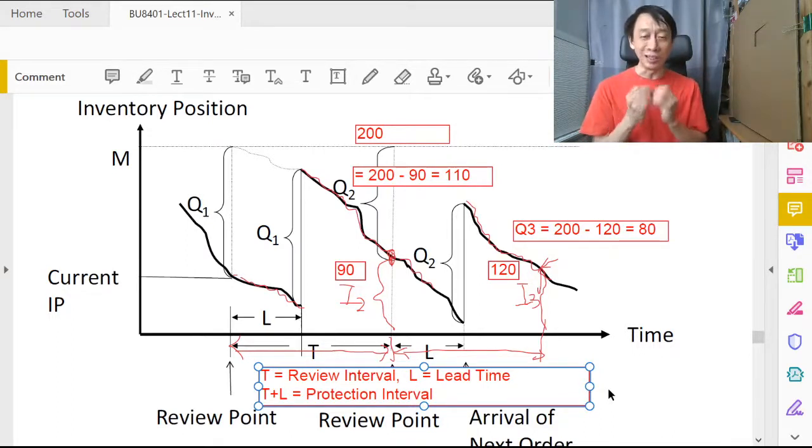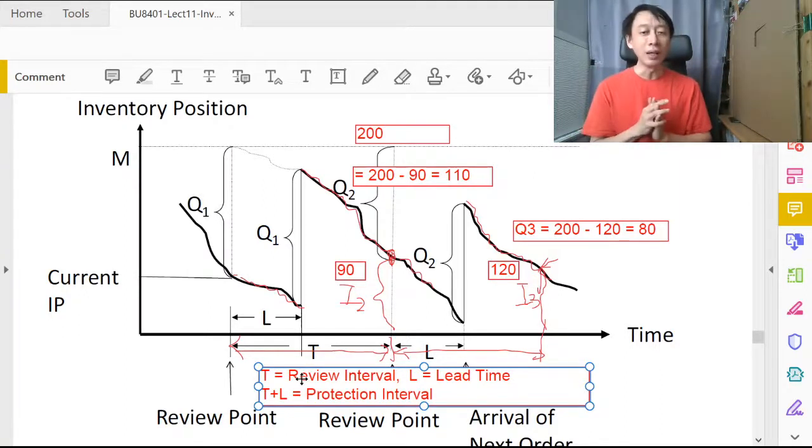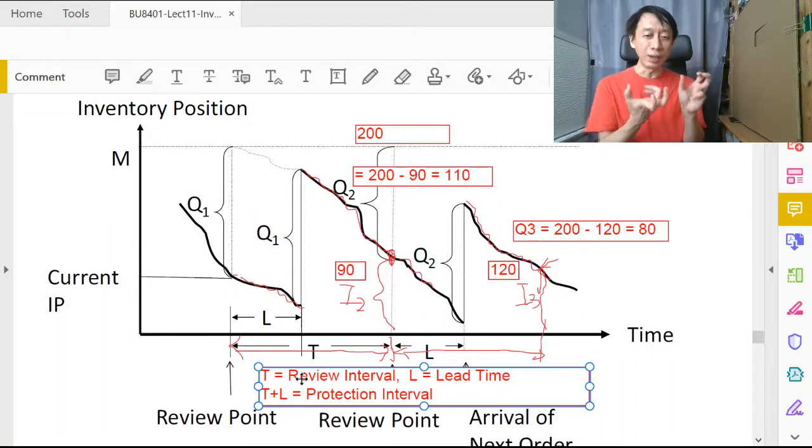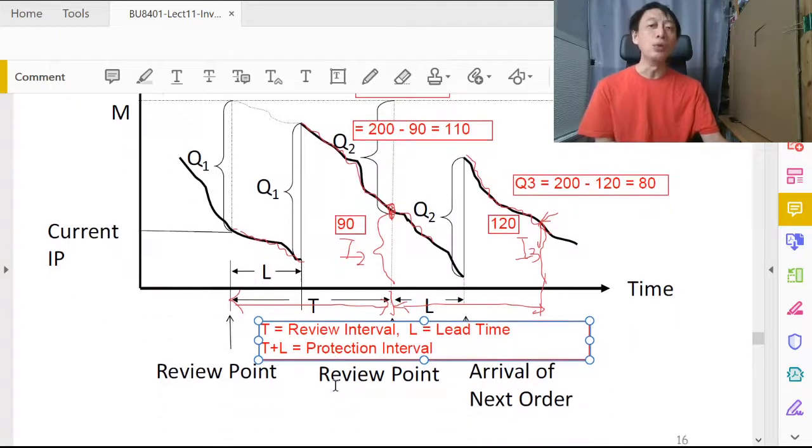Some of you might correctly sense that, assuming lead time is always smaller than the review period, maybe you should take the max, which is just T itself. Yes, but we are a little bit conservative here. We don't take max, which is hard to manipulate mathematically, so we just take the sum and call that the protection interval T plus L.